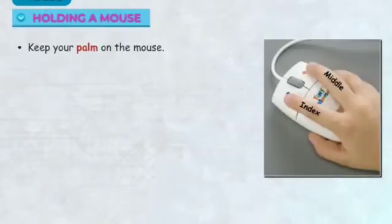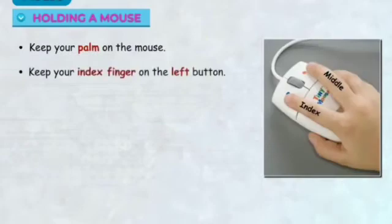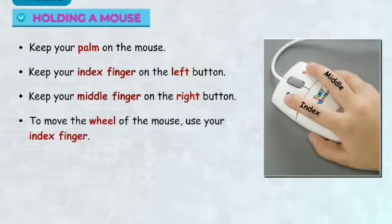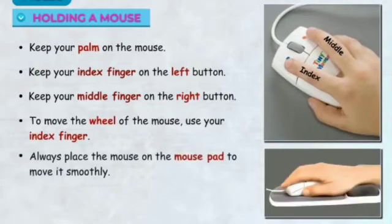Holding a mouse: Keep your palm on the mouse. Keep your index finger on the left button. Keep your middle finger on the right button. To move the wheel of the mouse, use your index finger. Always place the mouse on the mouse pad to move it smoothly.